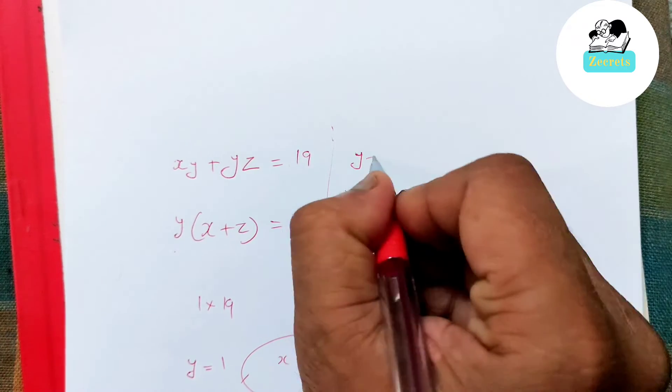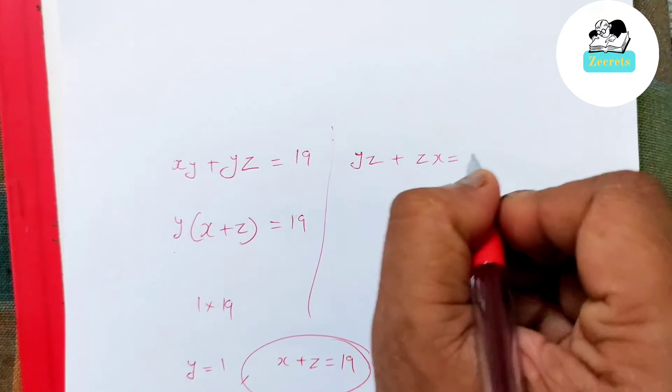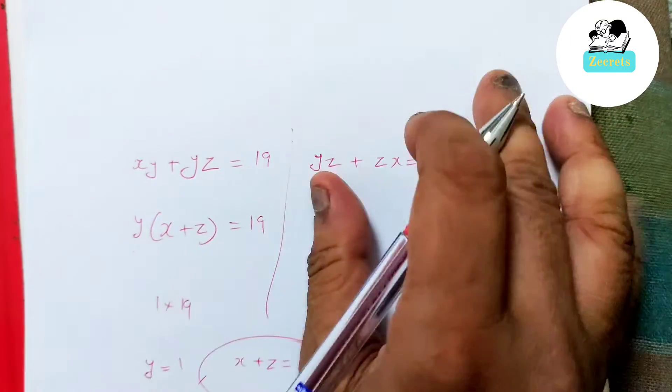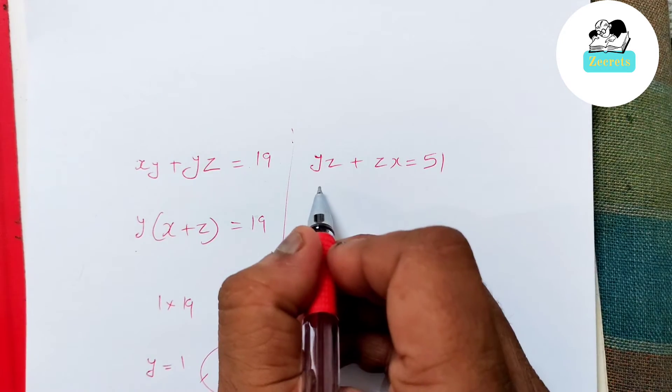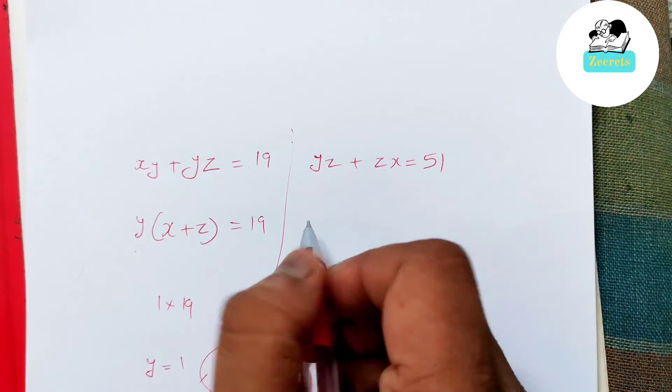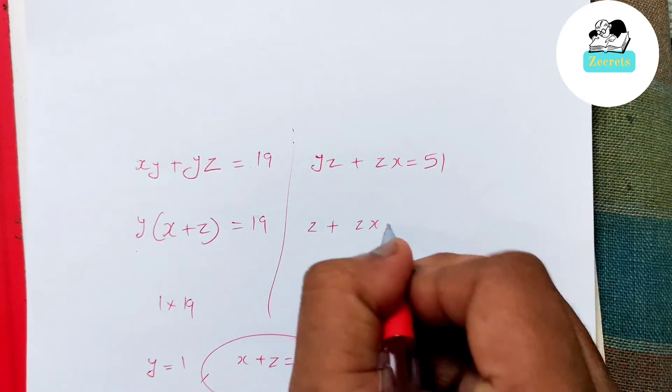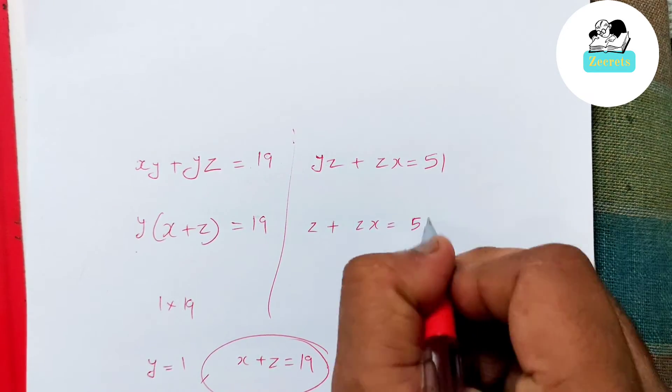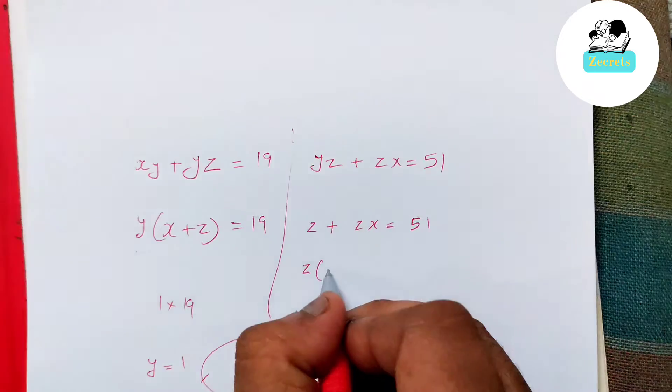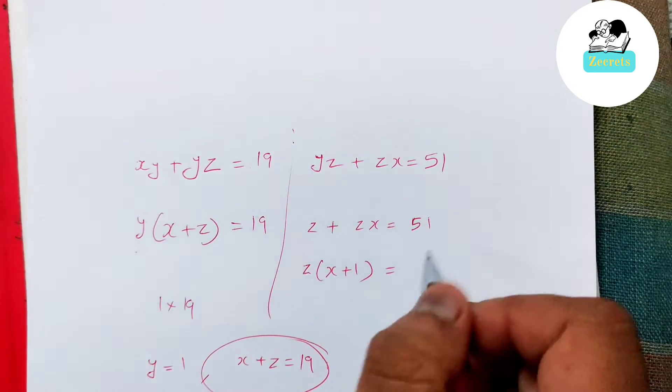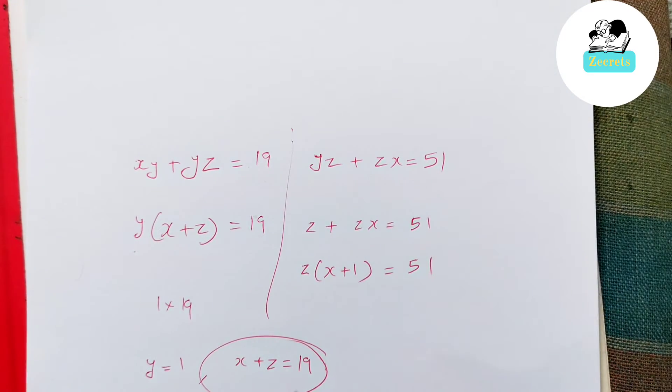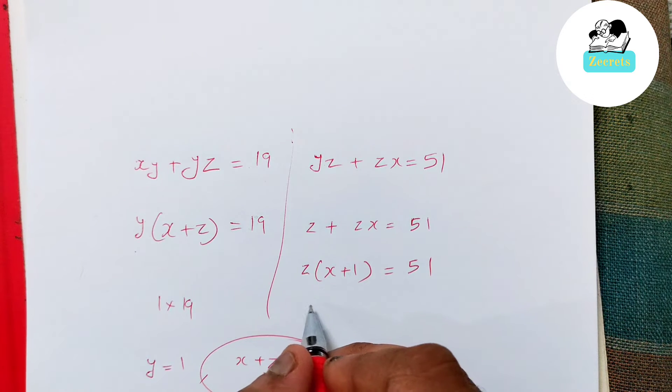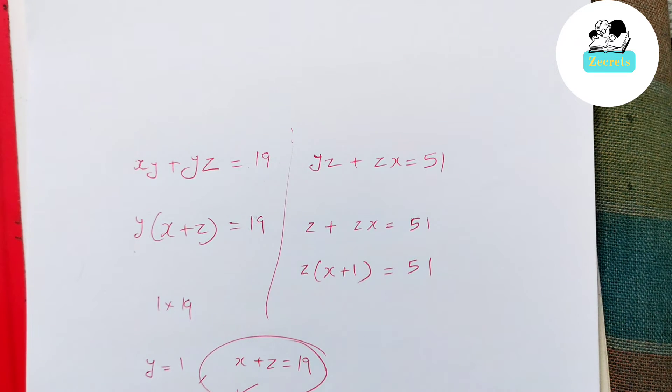Now what I'll do is solve the next one. It was given that yz plus zx equals 51. Now here I know that y is 1, that we already calculated. So z plus zx is 51, or if I take z common, it is z times (x plus 1) equals 51.